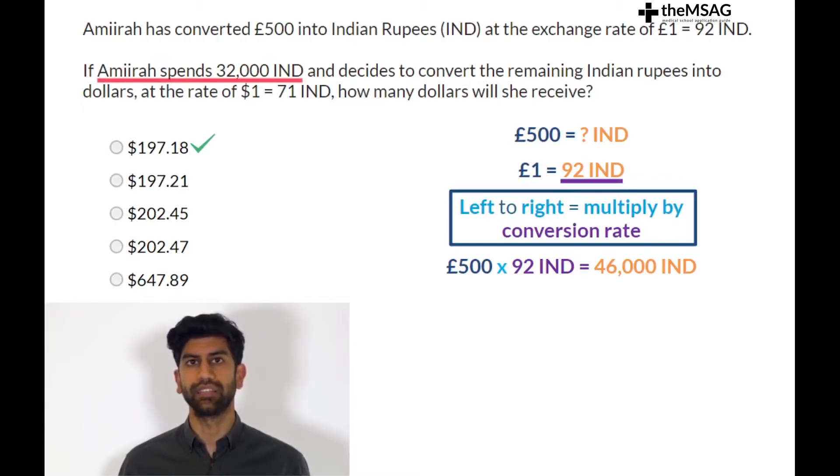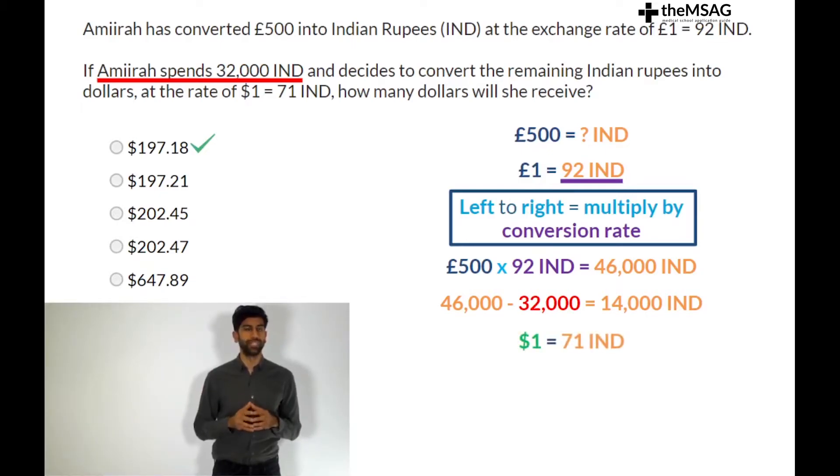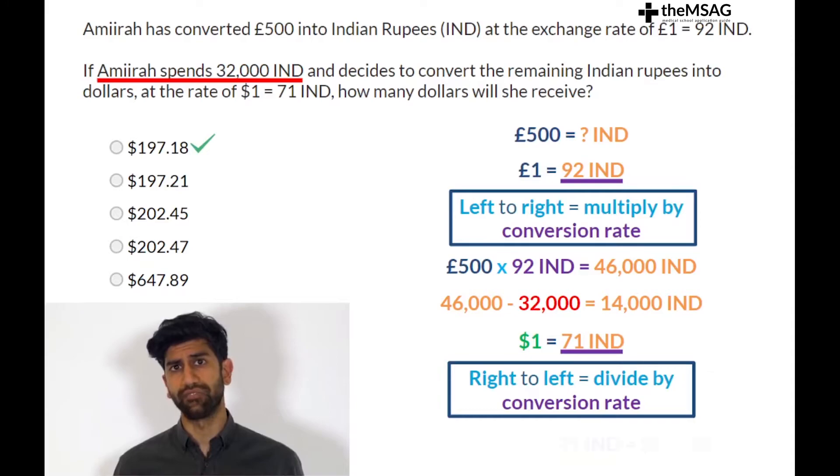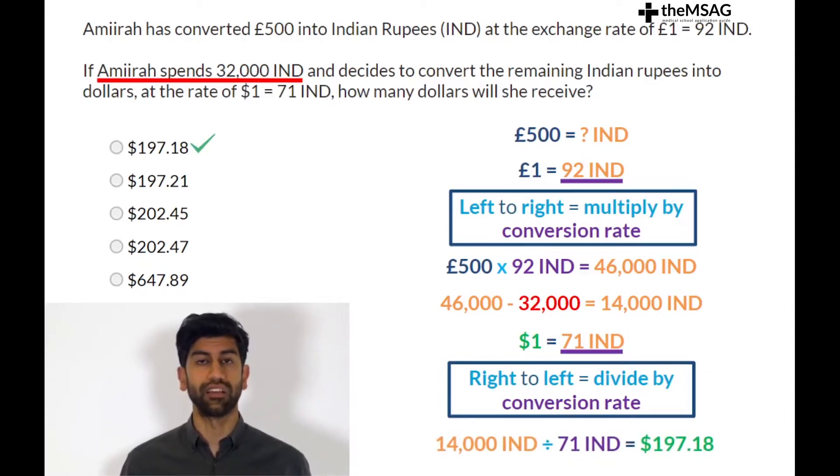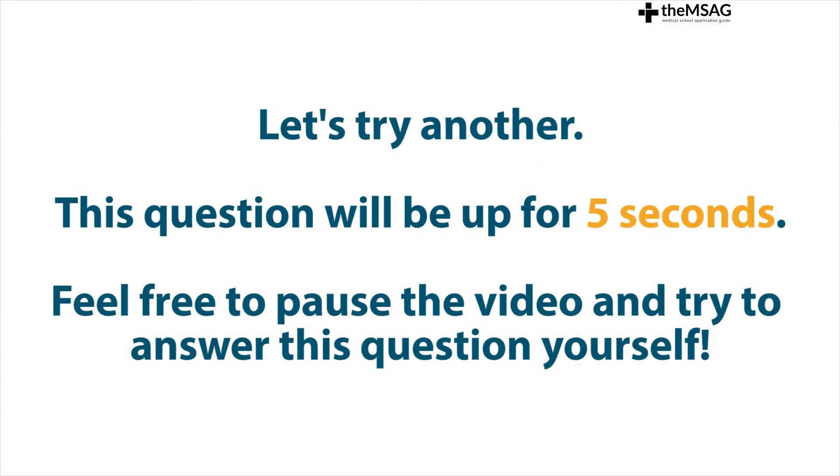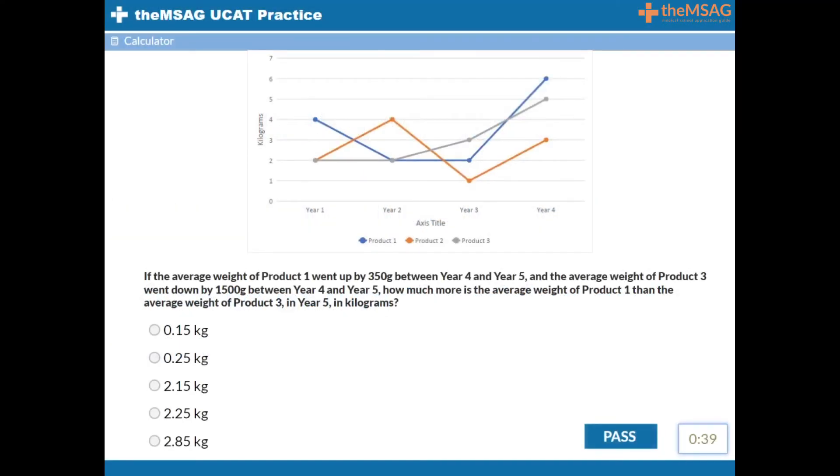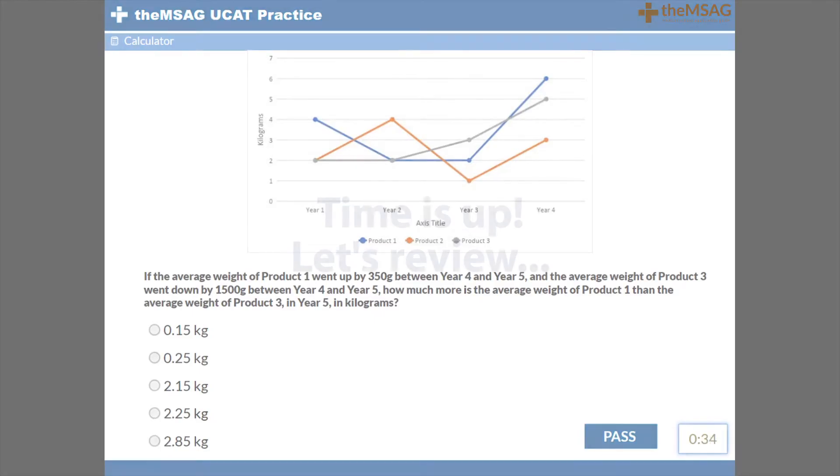Amira then spends 32,000. 46,000 minus 32,000 equals 14,000. She has 14,000 rupees left that she wishes to convert to dollars. This time we know that 1 dollar equals 71 rupees. We are converting from rupees to dollars so from right to left so we divide by the conversion rate. 14,000 divided by 71 equals 197.18 dollars.